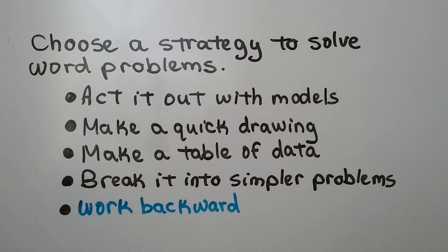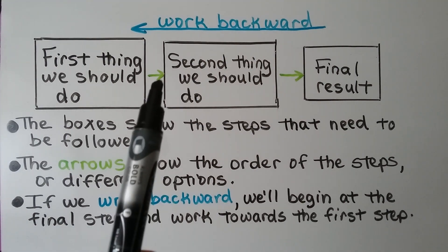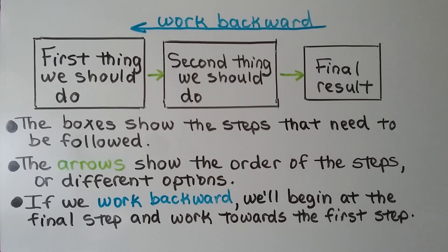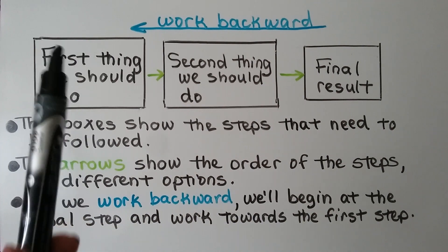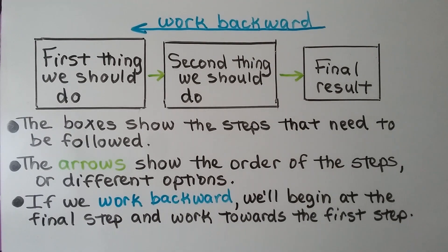There are several different strategies we can use to solve word problems. We can act it out with models, make a quick drawing, make a table of data or a chart, or break it into simpler problems. Or, like we're going to do in this lesson, we can work backward. The boxes show the steps that need to be followed, the arrows show the order of the steps or different options, and if we work backward, we begin at the final step and work towards the first step.